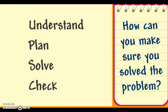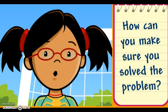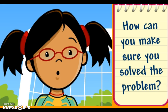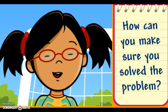Remember, when you come across a word problem, just follow these steps. First, understand the problem. Next, make a plan to solve it. Then, solve the problem. Finally, check your work. If your plan doesn't work, that's okay — you can just make another plan to solve the problem.